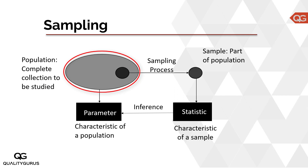The bigger circle is the population and the smaller circle inside it is the sample. When you sample, make sure the sample you are selecting from the population is a random sample, because a random sample will represent the whole population. You need to avoid bias — avoid picking things from one area only.